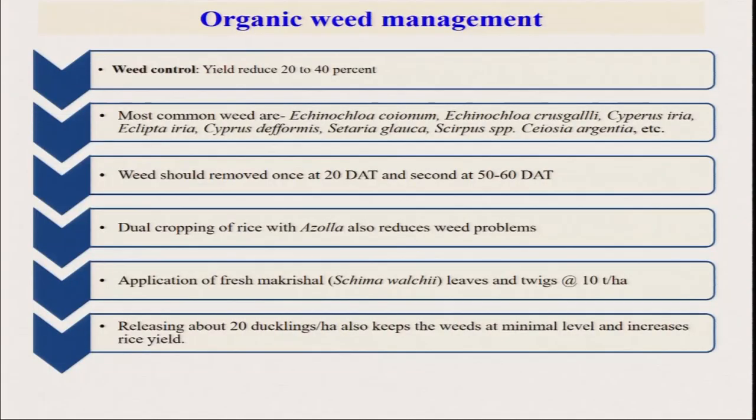For organic weed management — although less research attention has been given to weeds, they cause major problems. For lowland rice, sometimes 20 to 40 percent yield reduction occurs. For upland rice or direct-seeded rice, sometimes 70 to 80 percent yield loss occurs due to weeds. Some weeds are so clever they look just like rice plants — Echinochloa — and in the initial stage you cannot identify which is rice and which is the weed, and you cannot use any herbicide. So in organic rice production, weed control always takes too much cost.